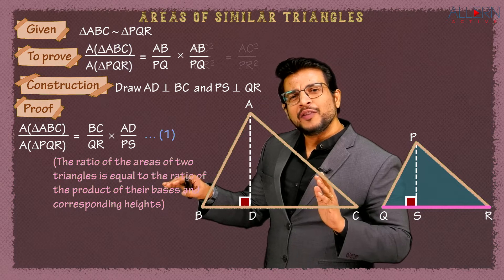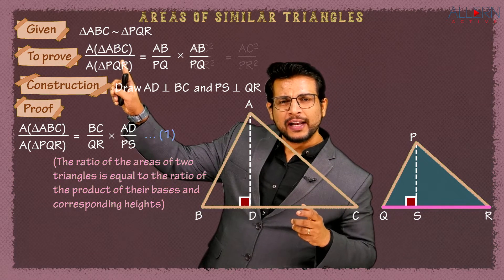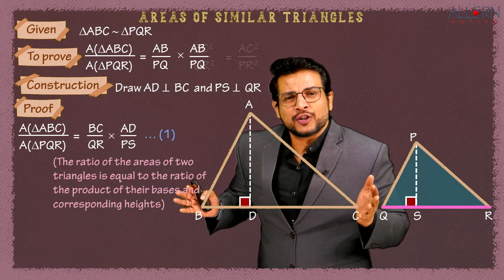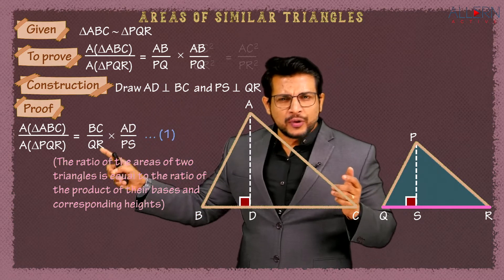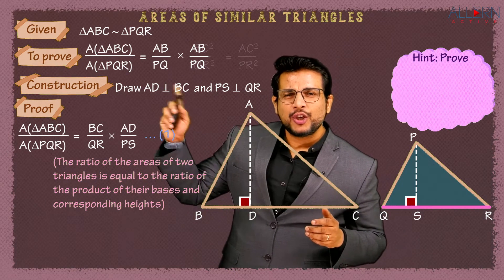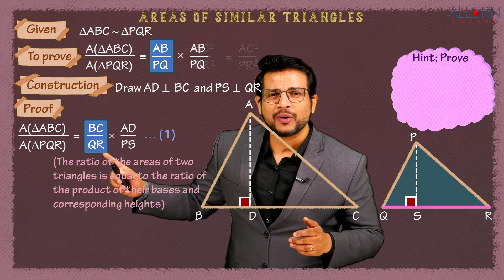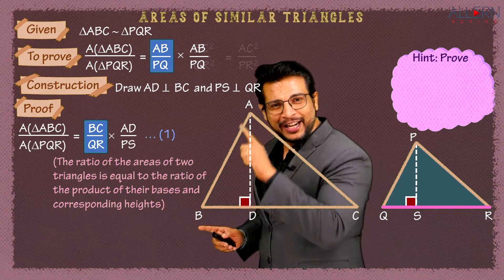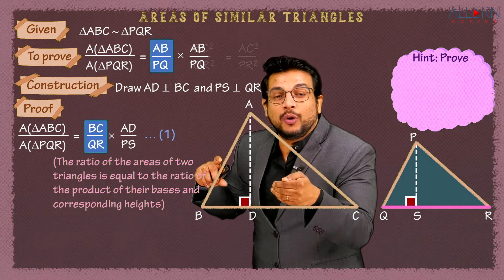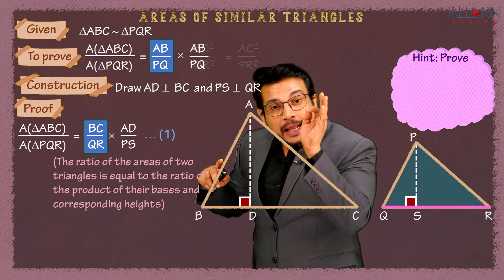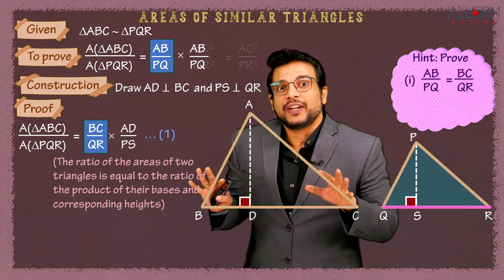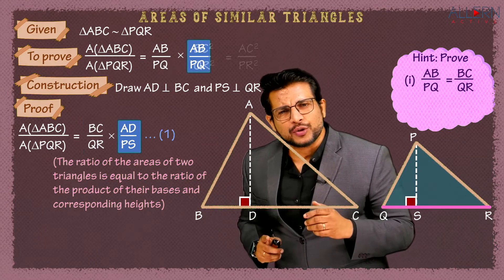We want AB/PQ but we have BC/QR — so we need to get BC/QR equal to AB/PQ. That's the first substitution we need. Similarly, instead of AD/PS we want AB/PQ — so we also need AD/PS equal to AB/PQ. To get two ratios equal we need to prove certain triangles to be similar.